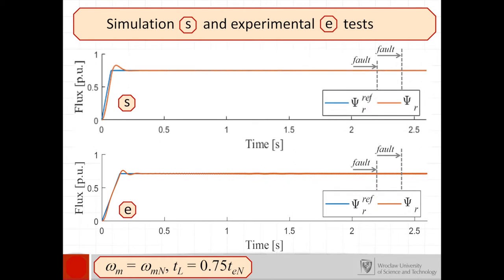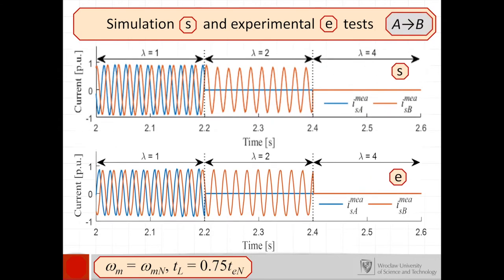The rotor flux is stabilized all the time despite the damage of the consecutive current sensors. The tests were carried out for two different orders of faults, first current sensor in phase A and next current sensor in phase B and vice versa shown in the paper.